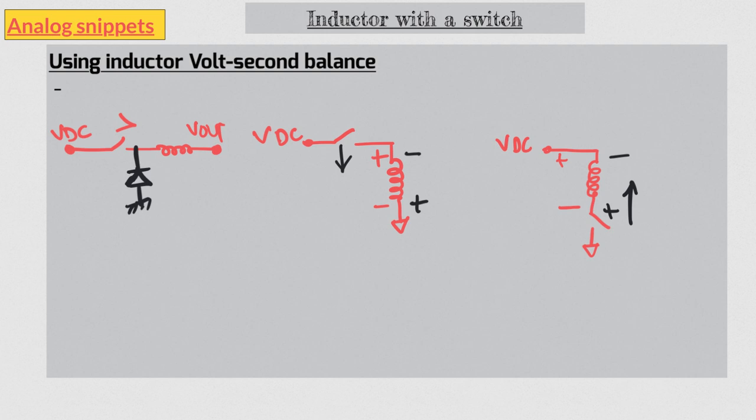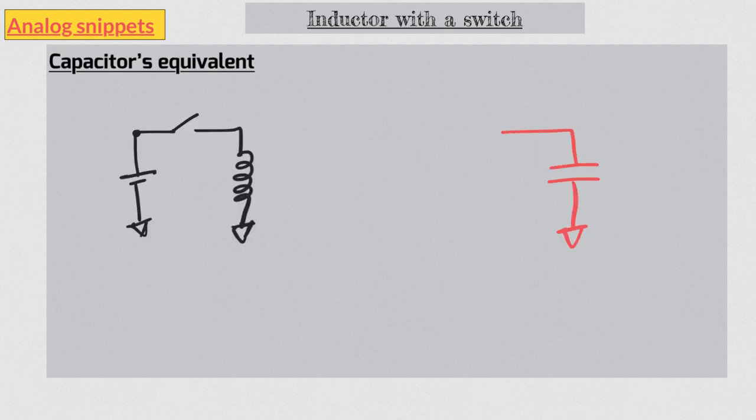So let's try to build an equivalent situation from the capacitor's point of view. From a capacitor's point of view a DC voltage source will be replaced by a DC current source. And a switch in series will be replaced by a switch in parallel. A switch on in inductor case will be equivalent to a switch off in capacitor case.